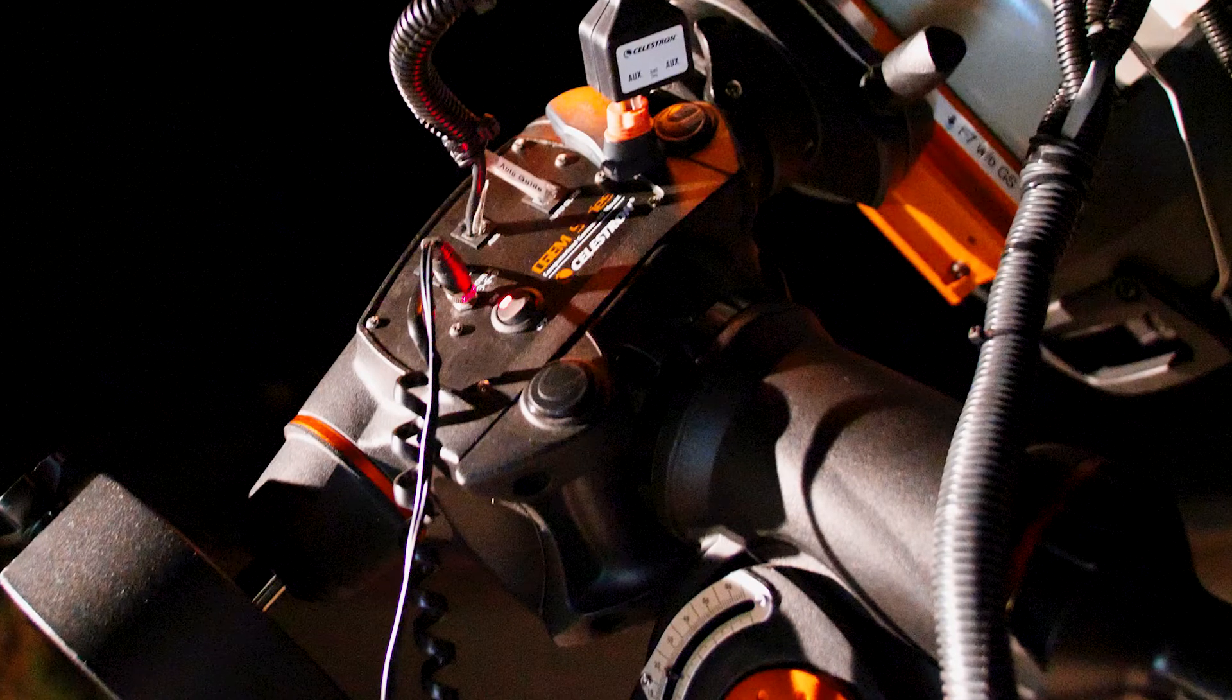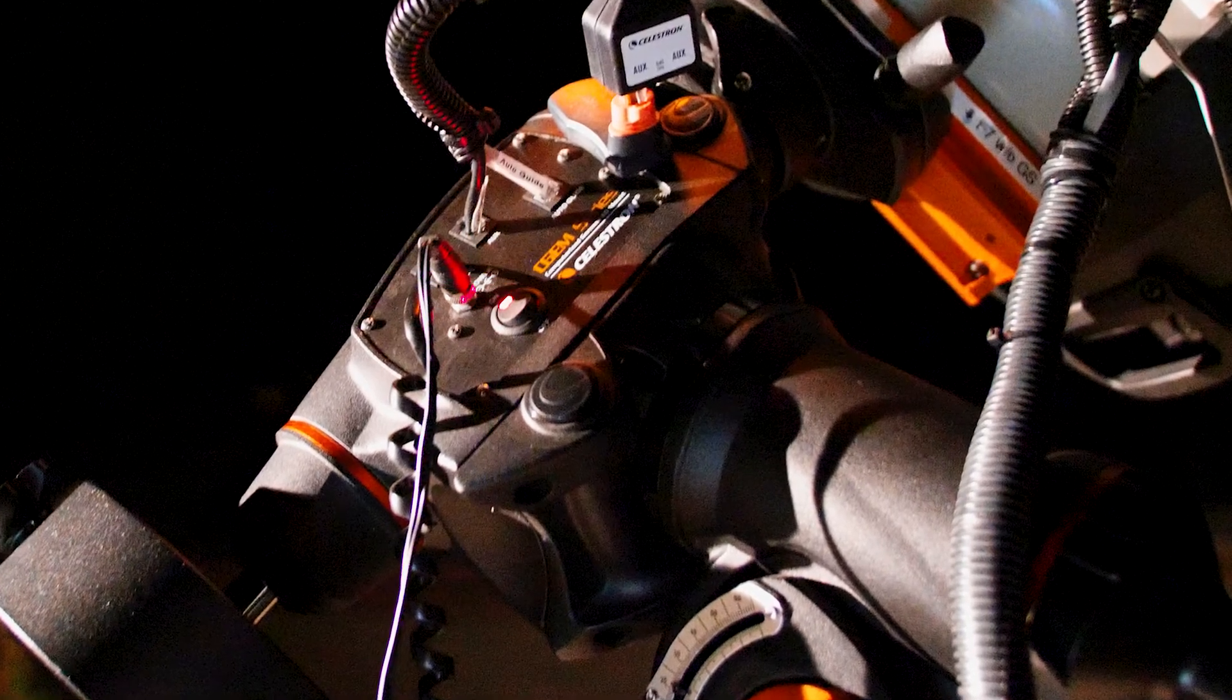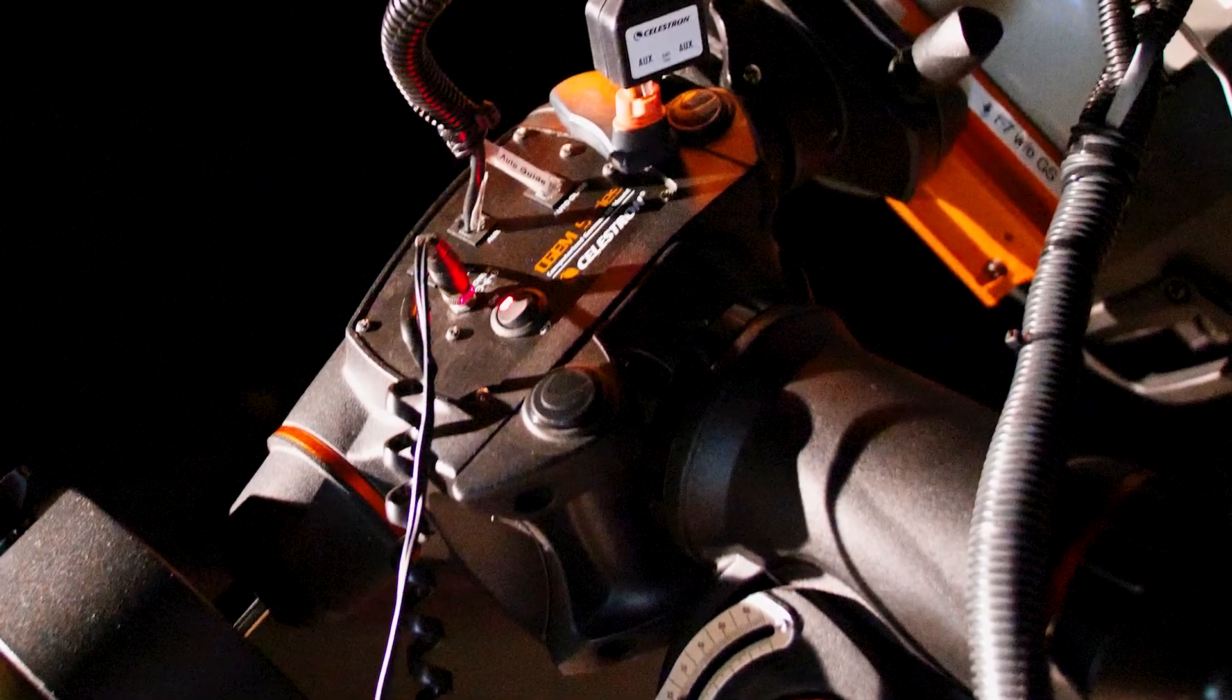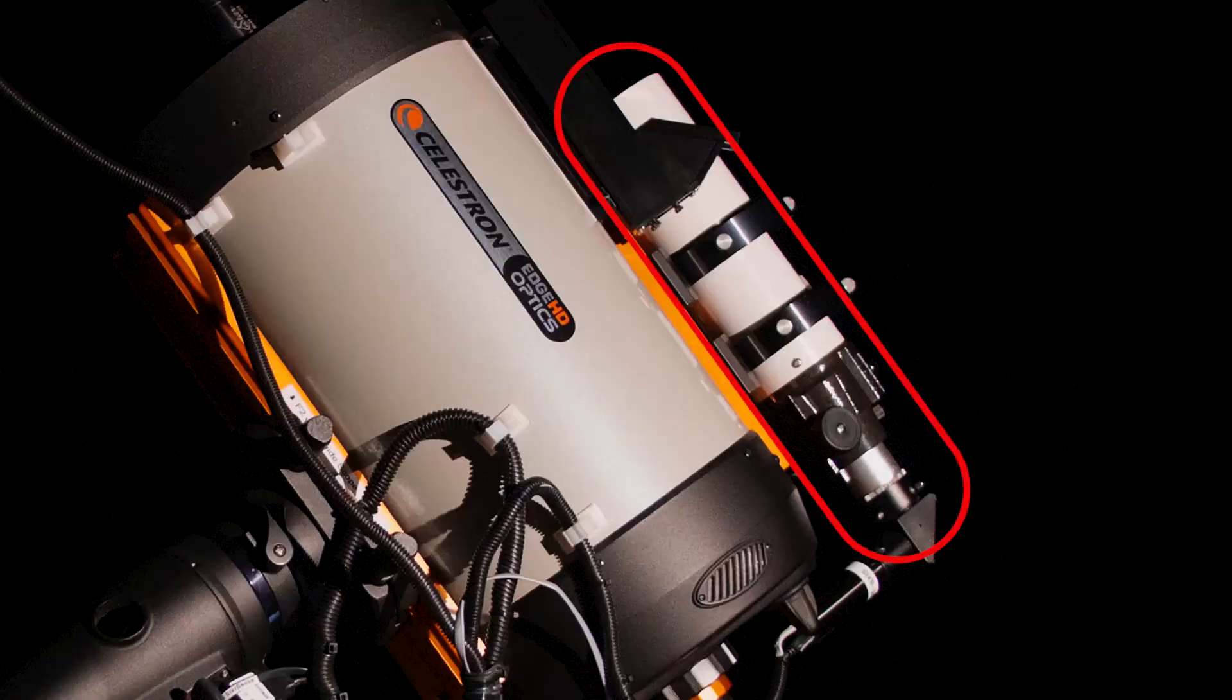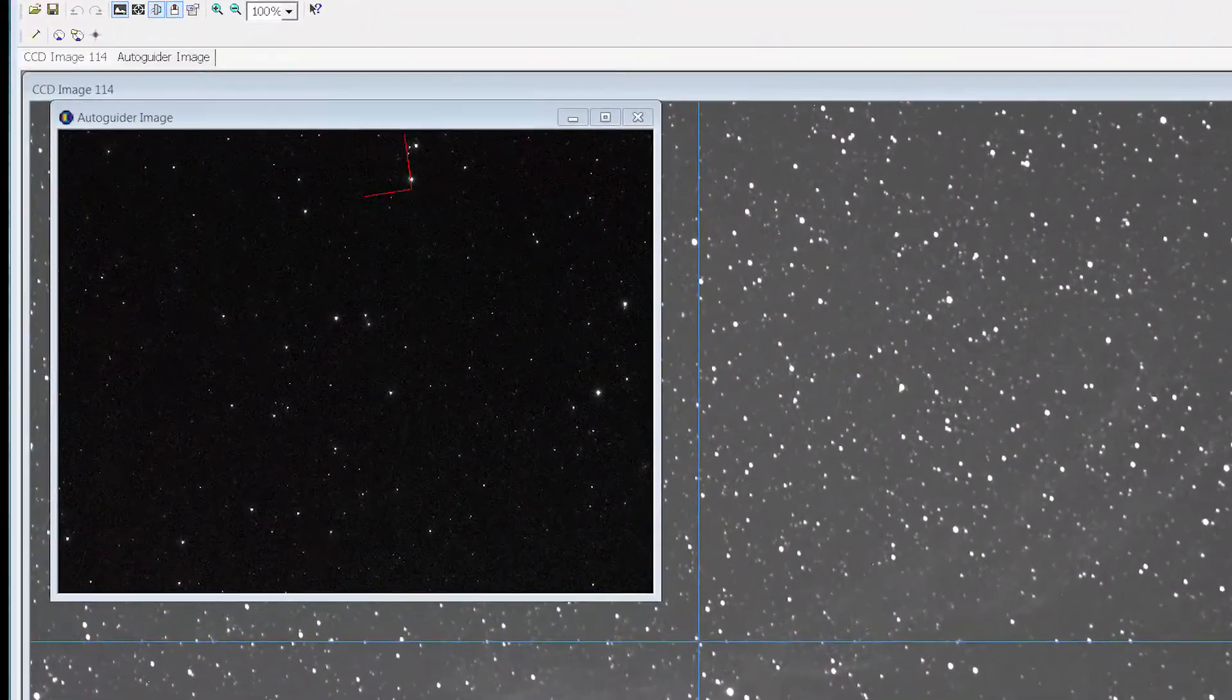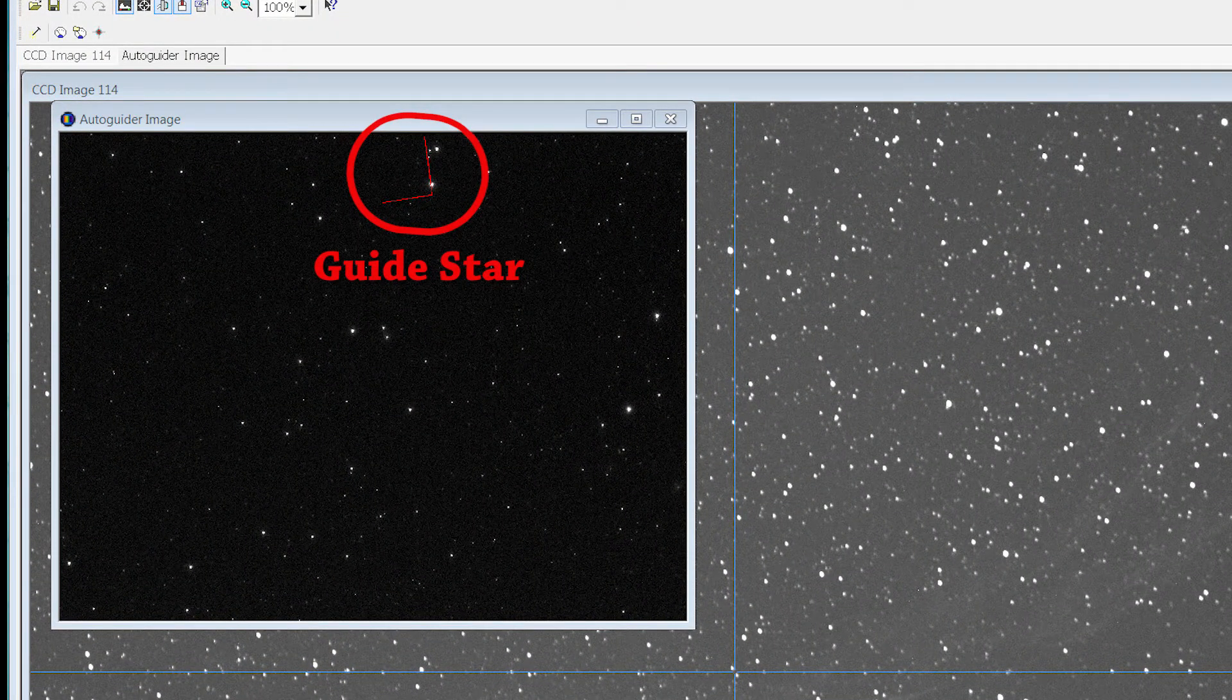The initial StarSense alignment of the German Equatorial mount only tracks well enough for exposures less than two minutes or so. To achieve better tracking for longer exposures, the guide scope is used. A star is selected for the guide scope camera to track on and the telescope follows the star.